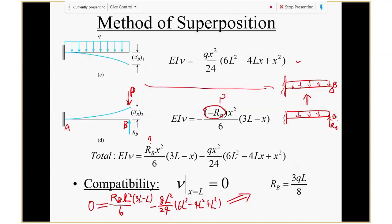That's how you use superposition — going into action. I assume everyone can work out RB from here. Once you know RB, you're done. Any questions? Now, if you look at the table, here's my next question: is there any other alternative solution?